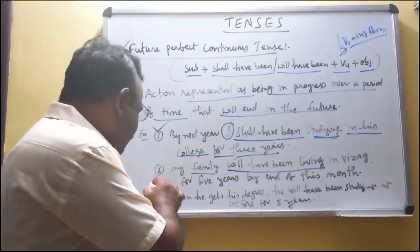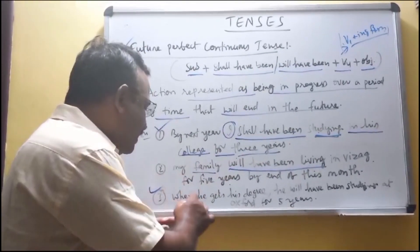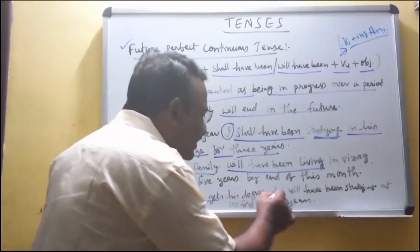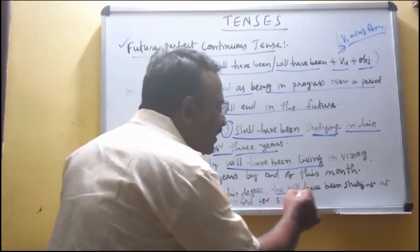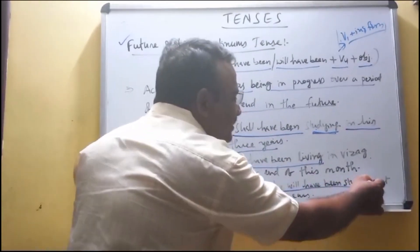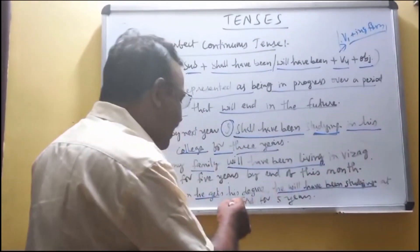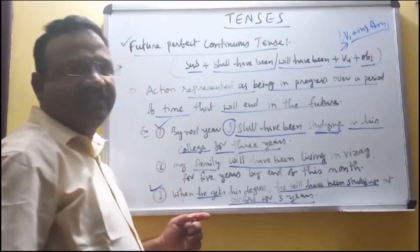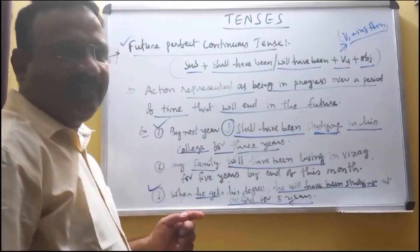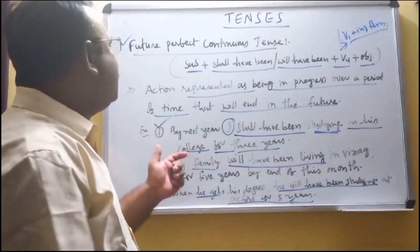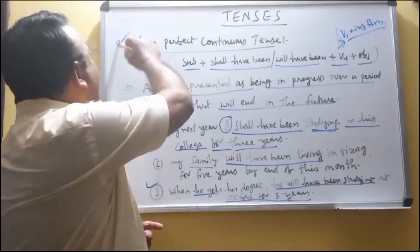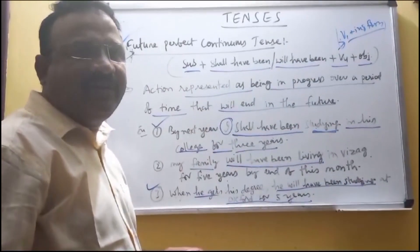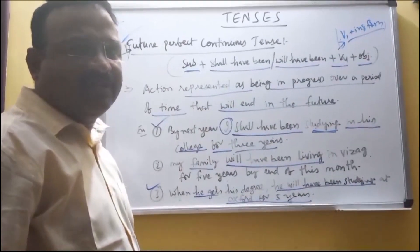One more example: 'When he gets his degree, he will have been studying at Oxford for five years.' In this case also, we have to use Future Perfect Continuous Tense.